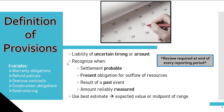Some examples of provisions include warranty obligations, refund policies, onerous contracts, construction obligations to clean up land, and restructuring. These examples create an unavoidable outflow of resources and often require historical knowledge to record the estimated amount, for example like using a warranty claim percentage from past years.